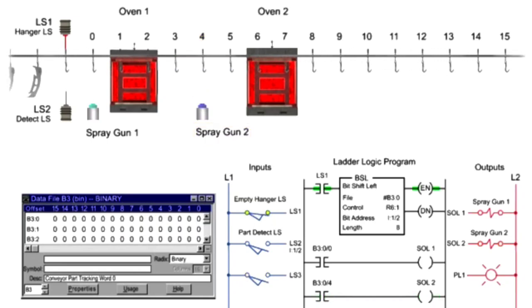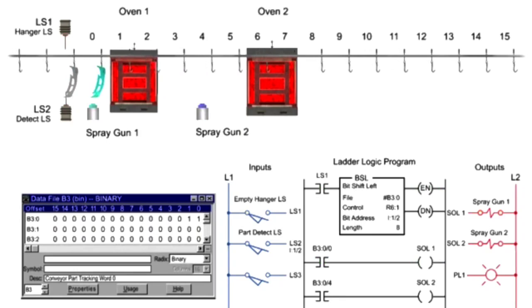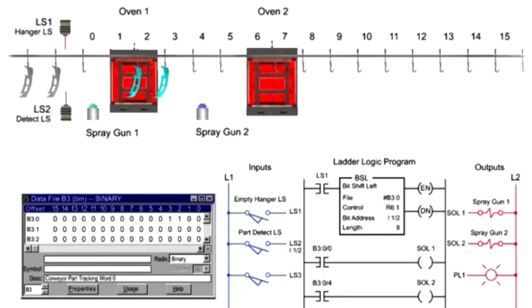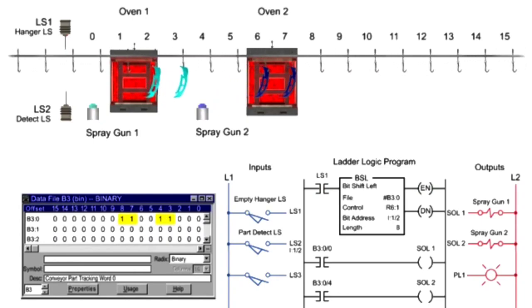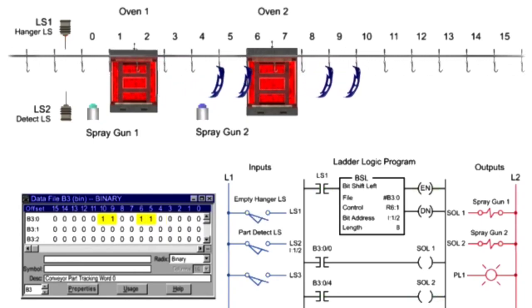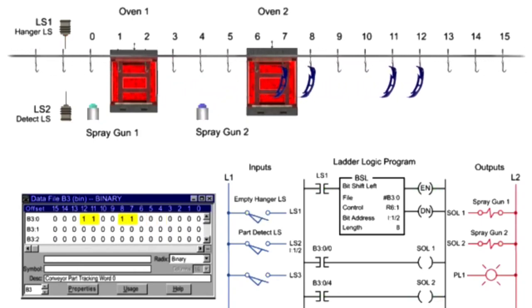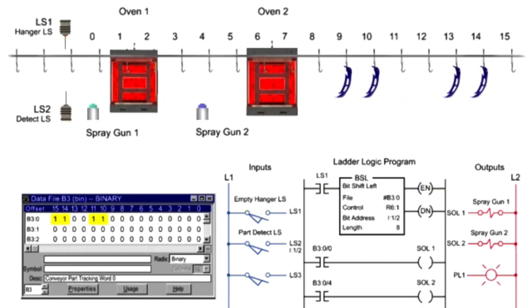The bit-shift-left instruction is further illustrated by loading the conveyor in varying batch sizes. Adding two parts loads a pair of logic 1s into the array as they trigger LS1 and LS2 simultaneously.